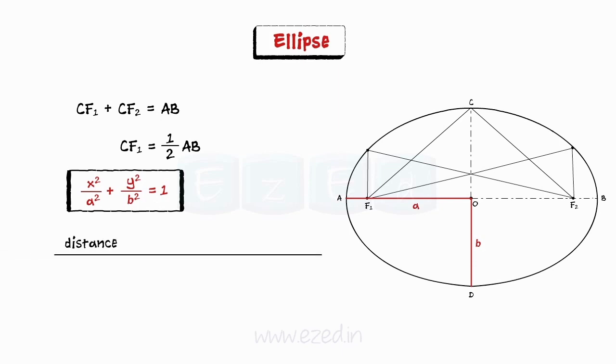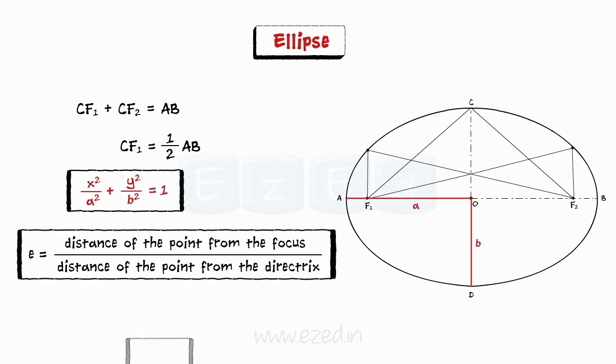The ratio of the distance of the point from the focus to the distance of the point from the directrix is called eccentricity, and for ellipse, it is always less than 1.